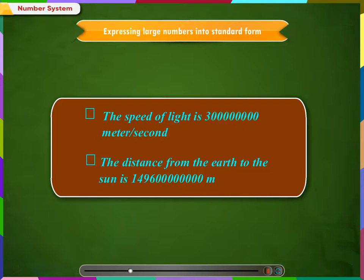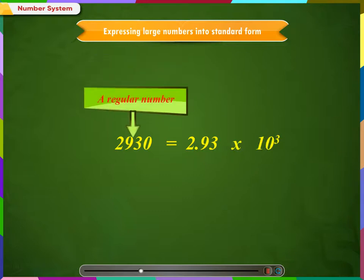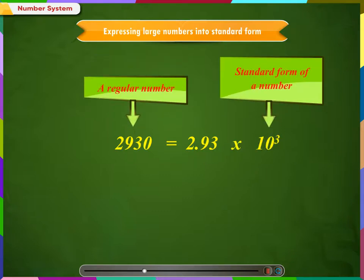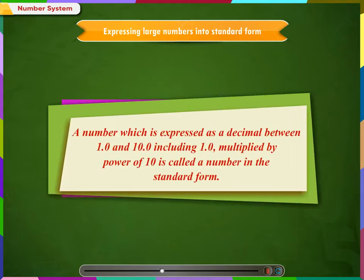So, how does the standard form of a number look like? A number when represented like this is called as standard number. A standard number has two parts. The first part is a decimal number and is always between 1 and 10. The second part is power of 10. Thus, a number which is expressed as a decimal number between 1 and 10, including 1 multiplied by power of 10, is called a number in the standard form.